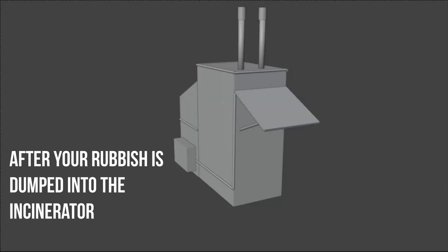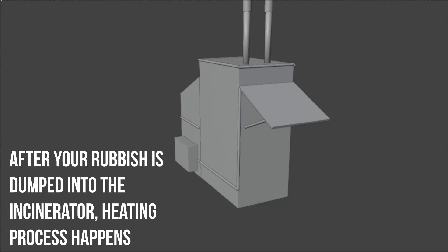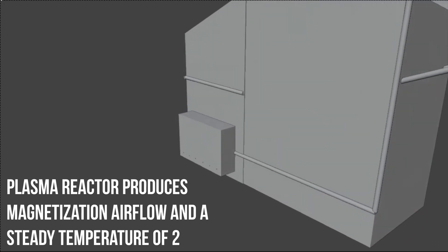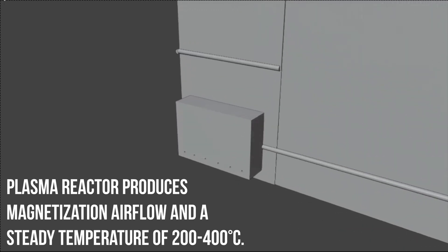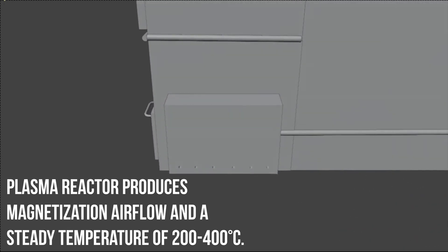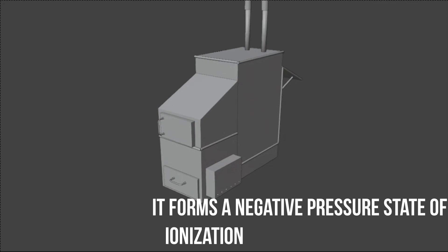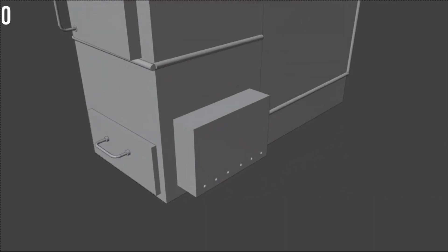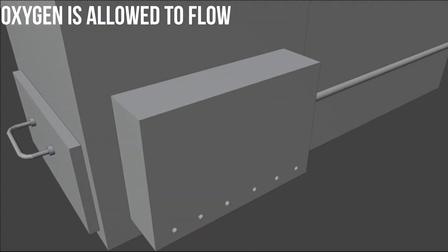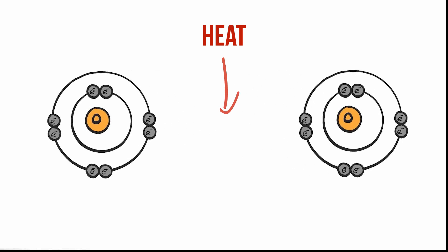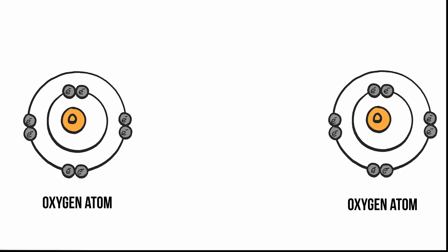After your rubbish is dumped into the incinerator, the heating process begins. The plasma reactor produces a magnetized airflow and maintains a steady temperature of 200 to 400 degrees Celsius, forming a negative pressure state of ionization in an enclosed chamber. Oxygen is allowed to flow in via a small opening, and the heat breaks the bonds in oxygen molecules so that reactive oxygen atoms are formed.